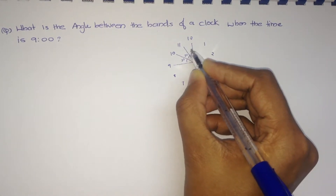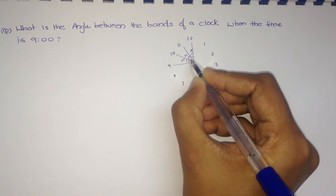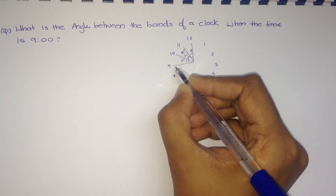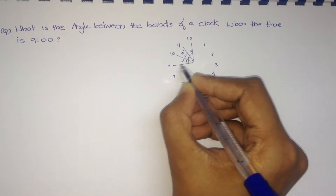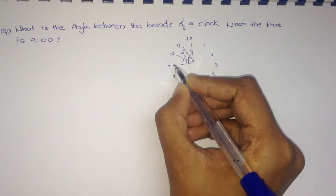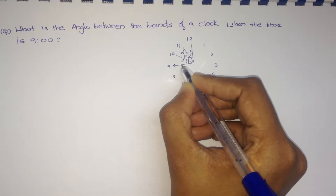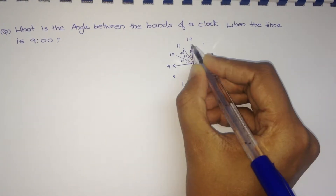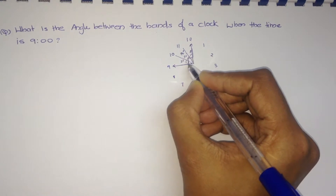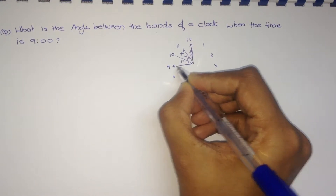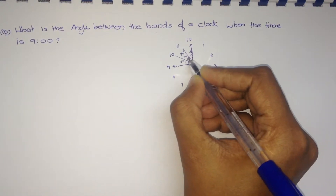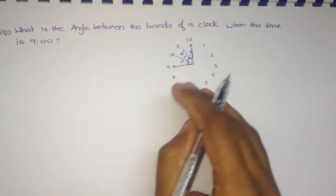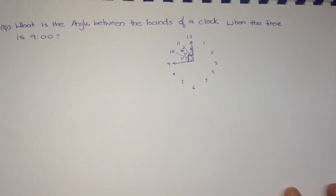Totally, what is the angle? 90 degrees. Therefore, the angle between the minute hand and hour hand when it is at 9 o'clock will be like this. Therefore, the angle is 90 degrees. Simply we can say it this way, while we are doing the problem we have to do it like this way.